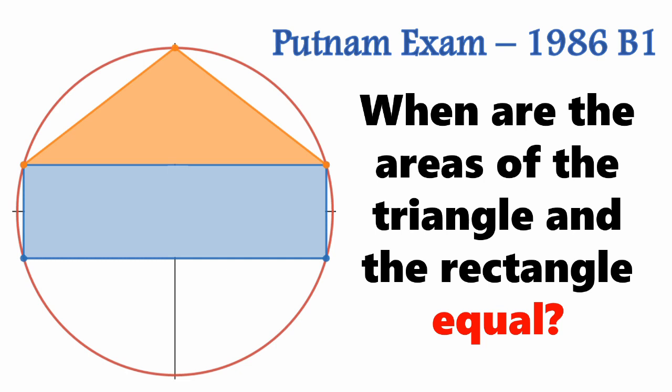This question comes to us from the 1986 exam, and it asks us to find under what conditions the blue rectangle and the orange triangle have the same area. Without further ado, let's get into the question.